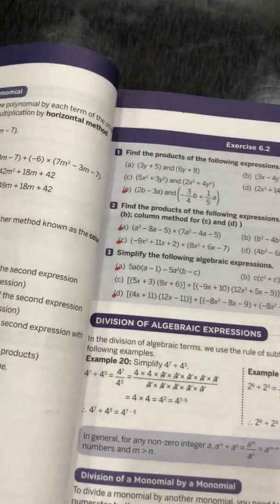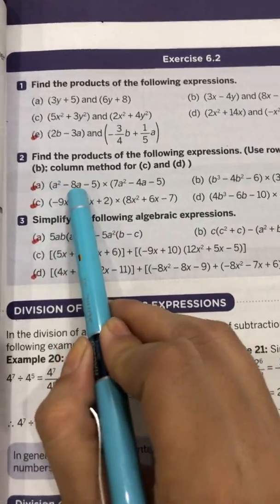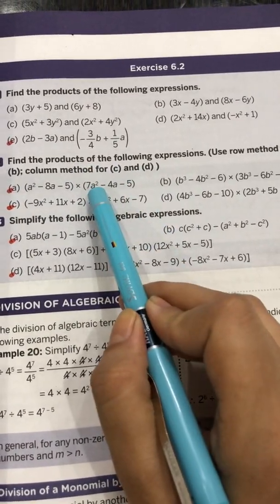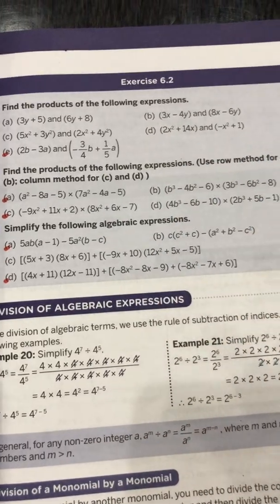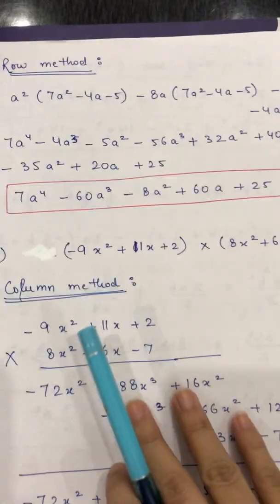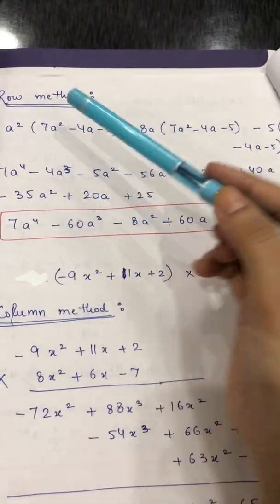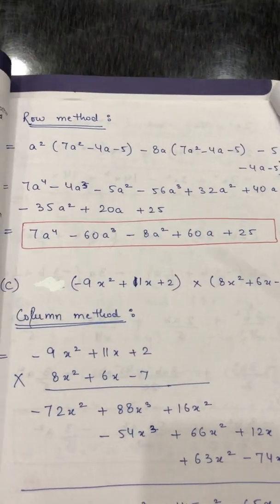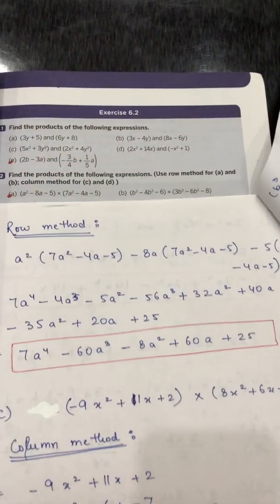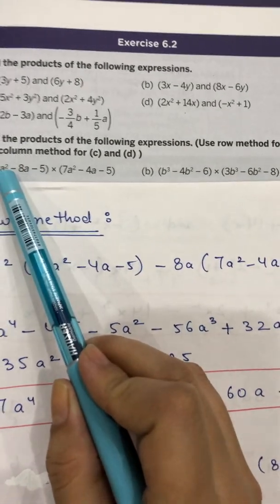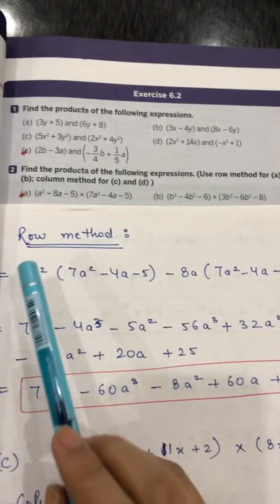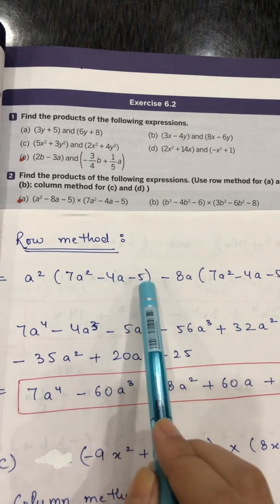Part A: the first expression is a² − 8a − 5, and you have to multiply it with the second expression 7a² − 4a − 5. First, mention which method you are going to apply — it is the row method. In the row method, you multiply a² with each and every term of the second expression: a² multiplied by 7a² − 4a − 5.